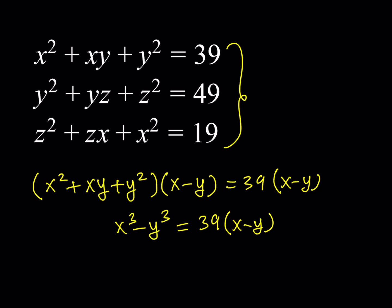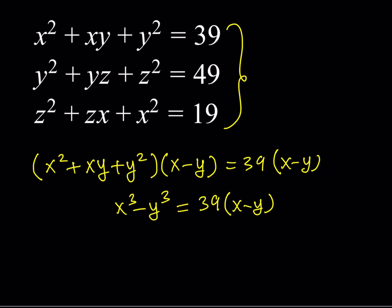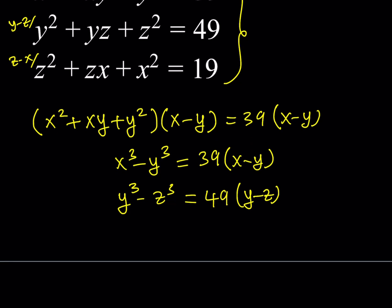I'll do this to every single equation. For the second equation, I'm going to multiply by y minus z, and multiply the third one by z minus x. The second equation becomes: y cubed minus z cubed equals 49 times (y minus z). And the third one, multiplying by z minus x, gives: z cubed minus x cubed equals 19 times (z minus x).